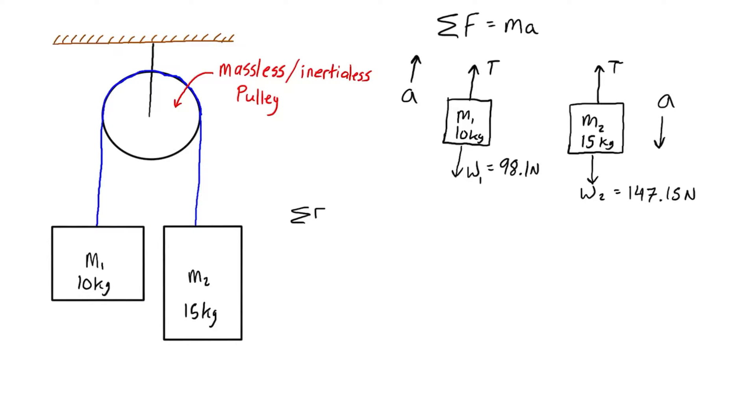Let's do the force balance for the first mass. We take the sum of forces equal to mass times acceleration. We're considering up to be the positive direction for acceleration and for our force balance. So we have tension minus weight 1 equals m1 times a.